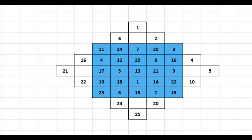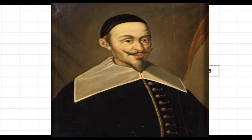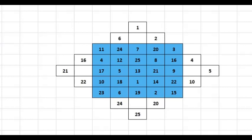Friends, today we will see the Bachet de Méziriac method to construct an odd order magic square. Bachet de Méziriac lived between 1581 to 1638, and this is a very simple method.